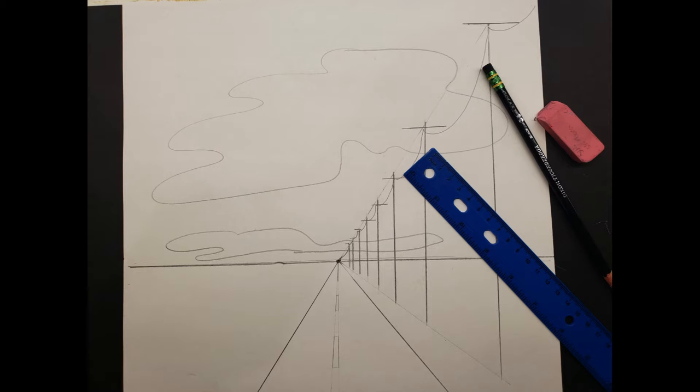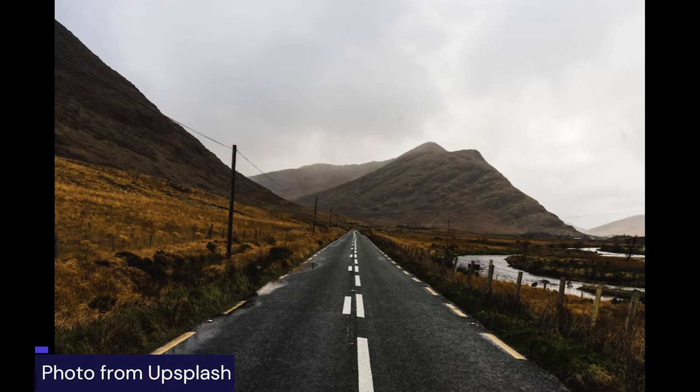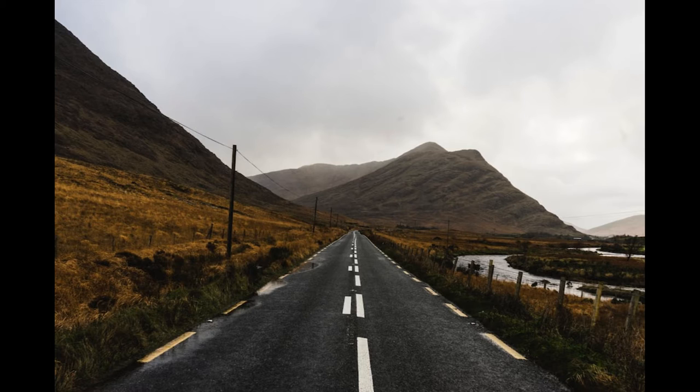We might see something in perspective if we're driving down the road and the road looks like it narrows as it gets further away from us. As we go towards this horizon line where the sky and the land meet, maybe you see telephone poles or buildings going by and the ones that are closest to us look bigger, but the ones that are further away look smaller. That's what we're talking about when we mean perspective.